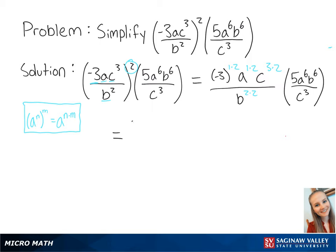This leaves us with negative 3 squared times a squared times c to the 6th, all over b to the 4th, times 5a to the 6th, times b to the 6th, all over c cubed.